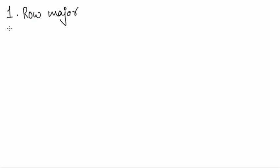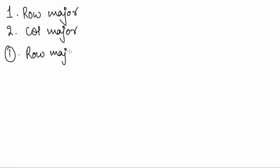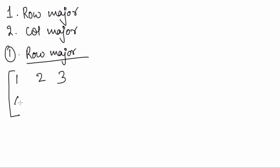Now let's talk about these two main ways one by one. The first method is called row major ordering, and the second way is called column major ordering. Now let's start with the row major ordering method. In row major ordering, the elements in a multidimensional array are stored in linear memory space row by row. Let's take an example of a multidimensional array like this.